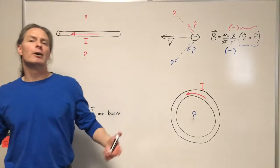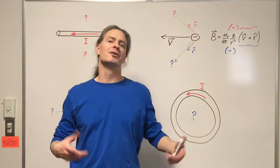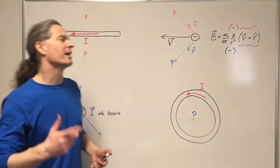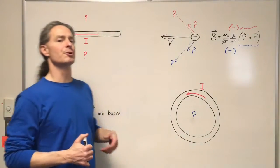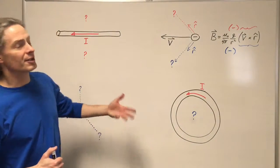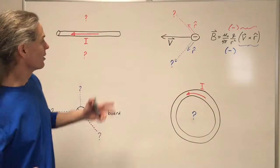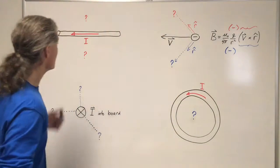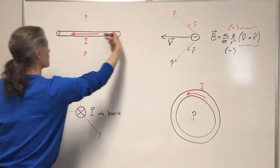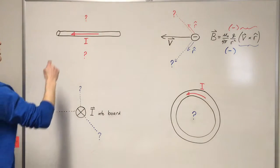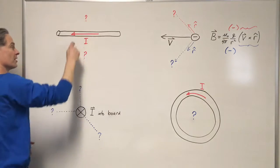Hi, everybody. In this video, I want to do some examples of using our original and derived right-hand rules to find the direction of the magnetic field produced by various currents and moving charges. Here are the four problems I want to do. First, we've got a current going through this wire to the left, and we want to find the direction of the magnetic field that current produces here and here.